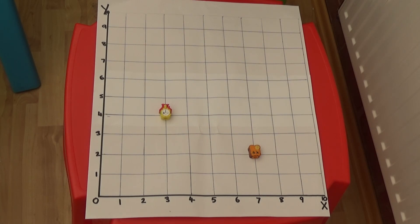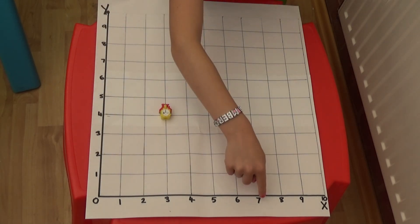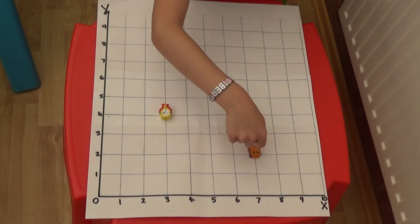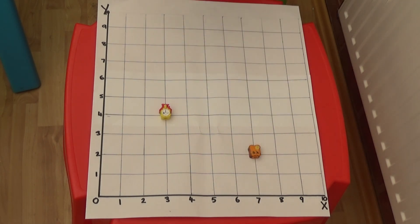If we look at another we can see the x-axis is seven. And the y-axis is two. So the coordinates for this one are seven, two.